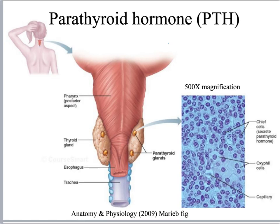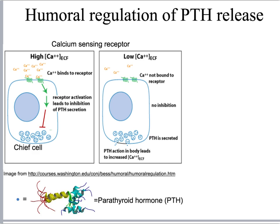Parathyroid hormone is released from the chief cells of the parathyroid gland. Regulation of parathyroid hormone secretion is called humoral because calcium is directly sensed in one of the humors — blood or extracellular fluid. Calcium binds to a G-protein coupled receptor on the chief cells, and signaling downstream of that receptor inhibits the fusion of vesicles to the cell surface. These vesicles contain parathyroid hormone, a peptide hormone.